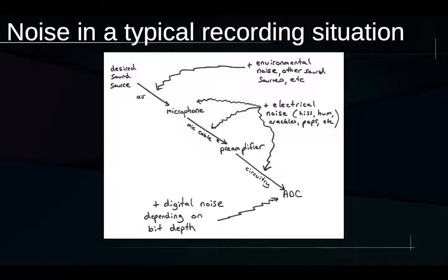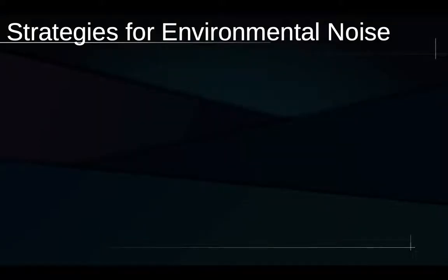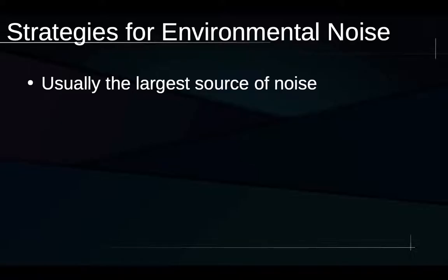Throughout this recording chain we have many different sources and levels of noise, and so naturally we have lots of different strategies we can deploy for reducing this and producing cleaner recordings. Let's talk about environmental noise first. We'll go through 12 strategies for dealing with noise. Environmental noise — things happening in the space where we are recording — is usually the largest source of noise in most recordings, present at much higher levels than other types of noise, making it the most important type to control.